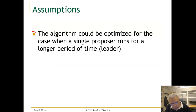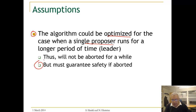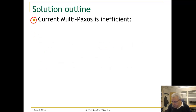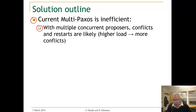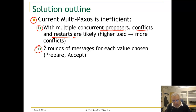The algorithm could be optimized for the case when a single proposer runs for a longer time. As long as this proposer is not aborted we can do something, but if it is aborted we still want to guarantee safety. Multi-paxos is inefficient as-is: with multiple concurrent proposers, conflict restarts are likely, creating load, aborts, and back-offs. Also, each proposer requires two rounds of messages — a prepare phase and an accept phase — for each decided value.